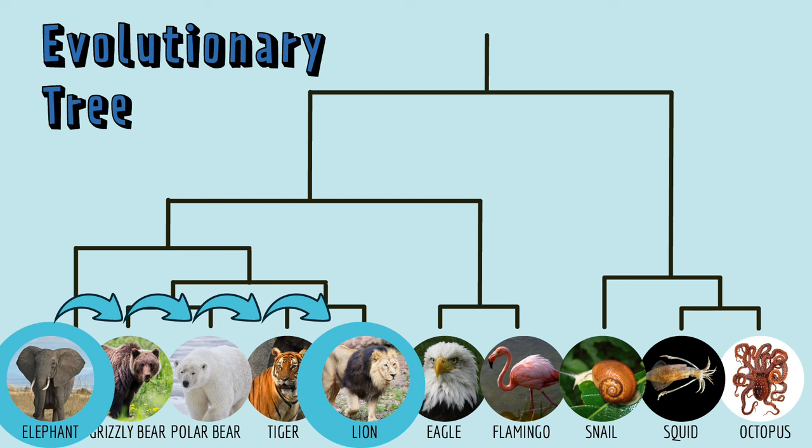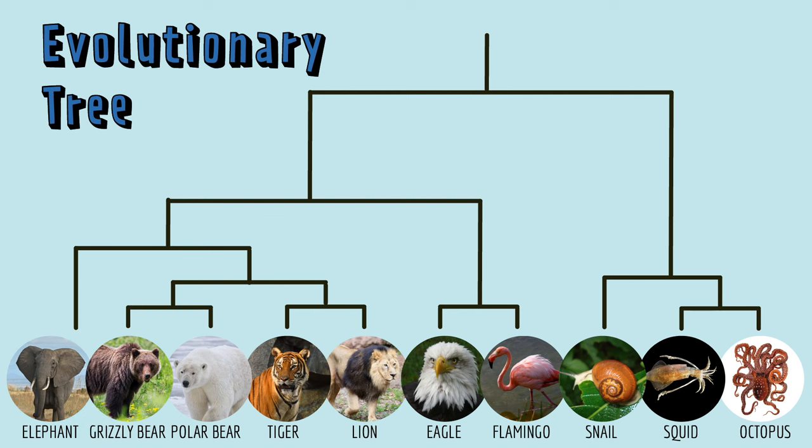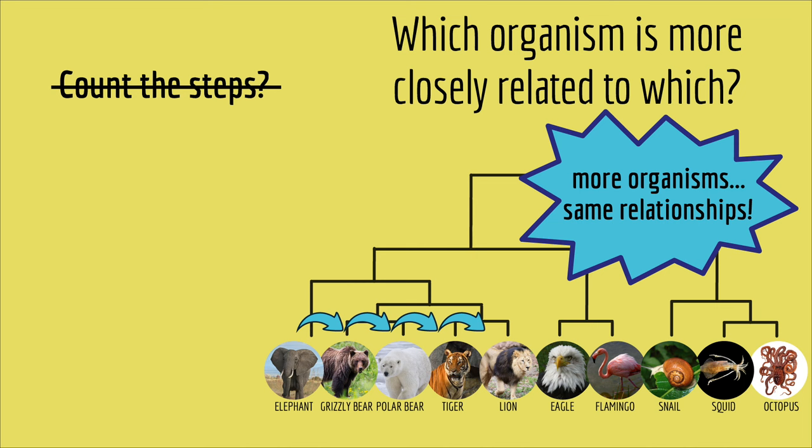now it seems like elephants are really distantly related to lions. But of course, the relationship between elephants and lions hasn't actually changed. I've just included more animals on the tree. So, don't count the steps. Whether there are just a few organisms on the tree, or a lot, it doesn't change the relationships between the organisms.